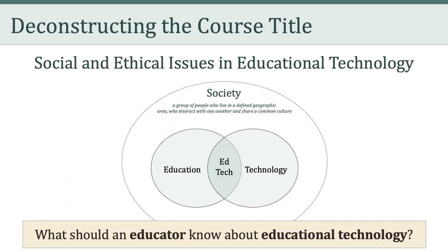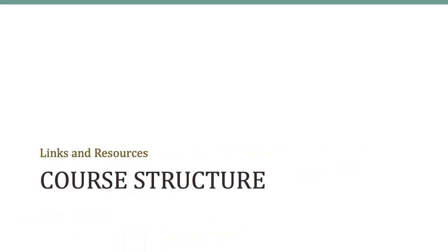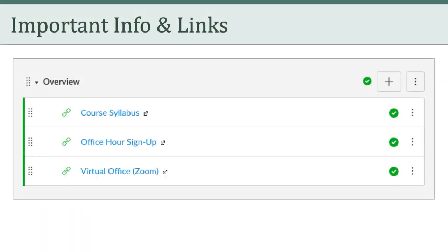That's a 30,000 foot view of LTCH 676 content. Now I'd like to take a few minutes to talk about the course structure. This course is online and asynchronous, meaning everything will happen remotely and there's no real-time class to attend. For these reasons, we'll rely heavily on our learning management system, Canvas. When you first log into Canvas, there's some important information and links to be familiar with. In the overview module, you'll see three things: the course syllabus, the office hour sign-up sheet, and the link to my virtual office.